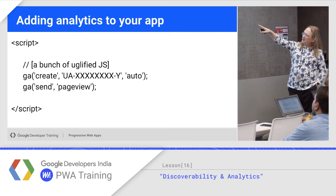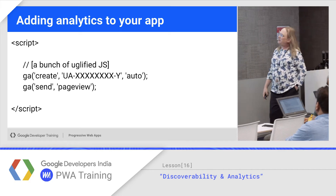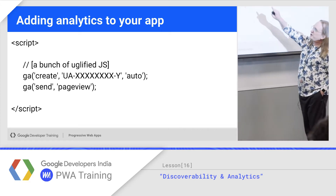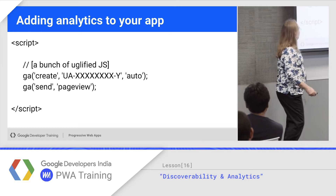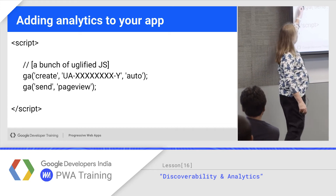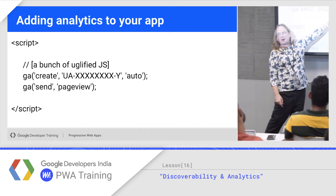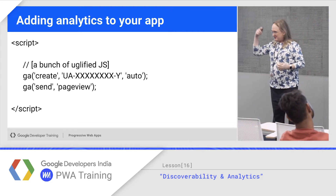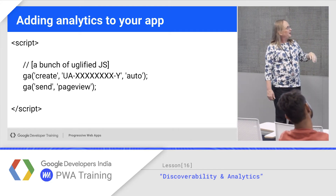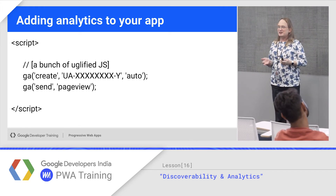This is what the snippet looks like. There's a bunch of uglified JS above this, but at the bottom, that creates a function called GA — Google Analytics. The analytics function: you call create and give it your tracking number, which will be some number you've been given. That creates a connection, and then you start sending it events. In this case, you're going to send it page view events for each page the user looks at.